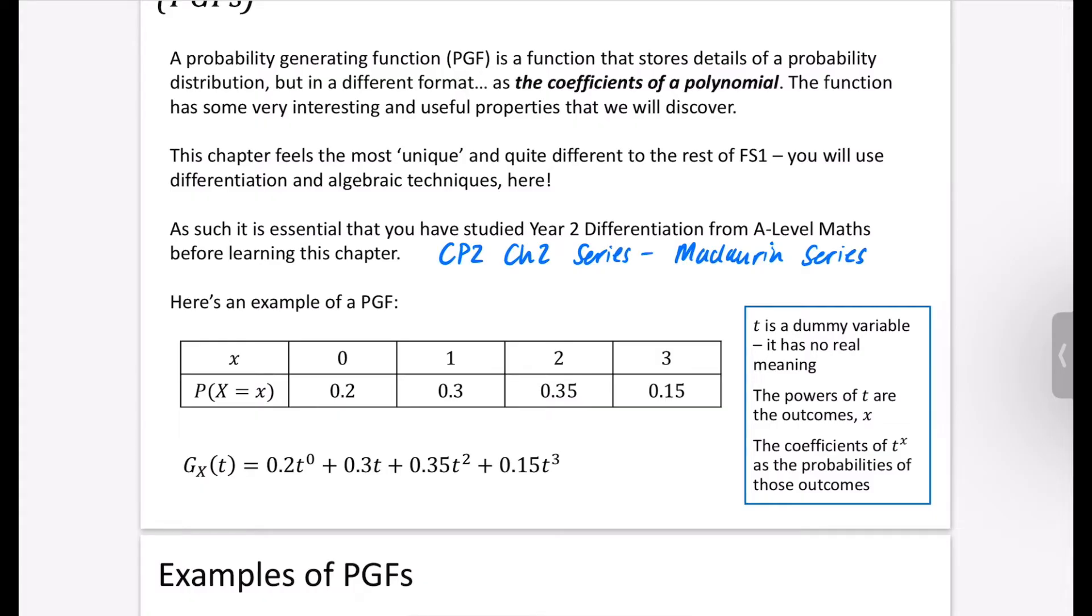So I'm actually just going to show you what a probability generating function is. So we've got this distribution here. We've got the outcome 0, 1, 2, and 3, and we've got the probabilities of those outcomes along the bottom here. And these are obviously all of the outcomes because it all adds up to 1. So the probability generating function, the function which is going to generate the distribution x, the generating function of x in terms of t, and t is just a dummy variable, meaning it's got no real meaning, is equal to this thing that we've got here. And actually, I just wonder if you can think about what the connections are. Well, it's pretty clear that you can see that the powers of t that we've got here, they are referring to the outcomes, and then the coefficients of t to the power of x are the probabilities of those outcomes.